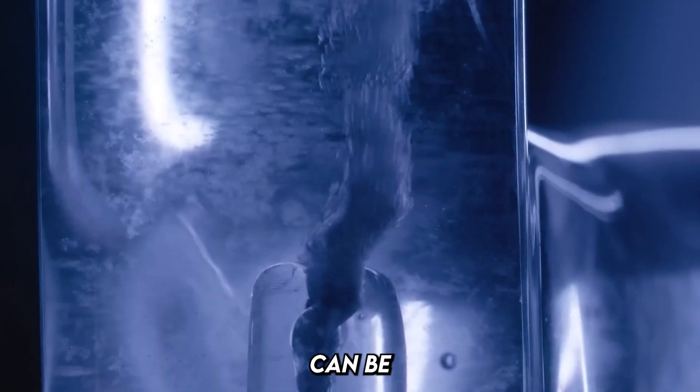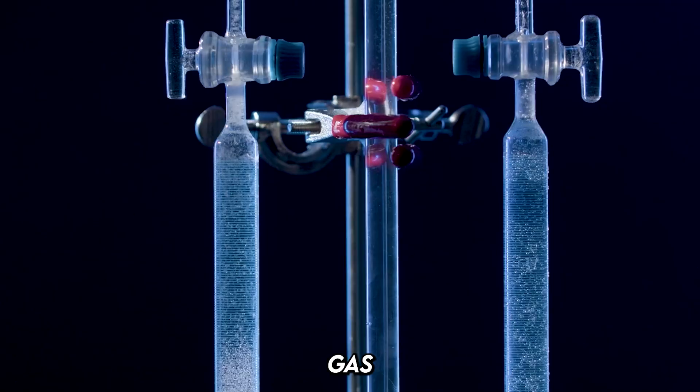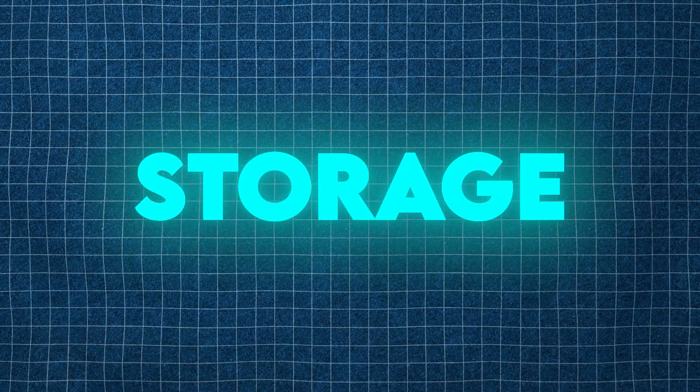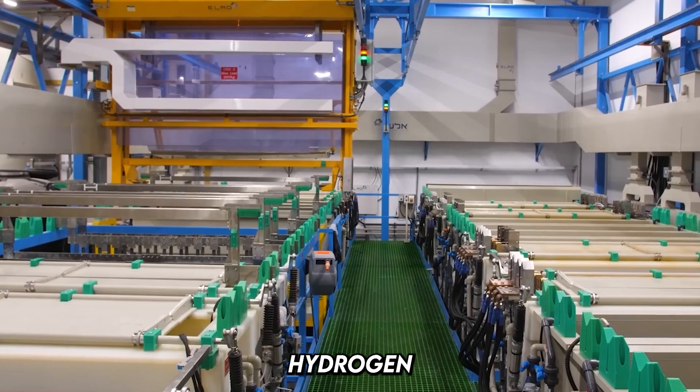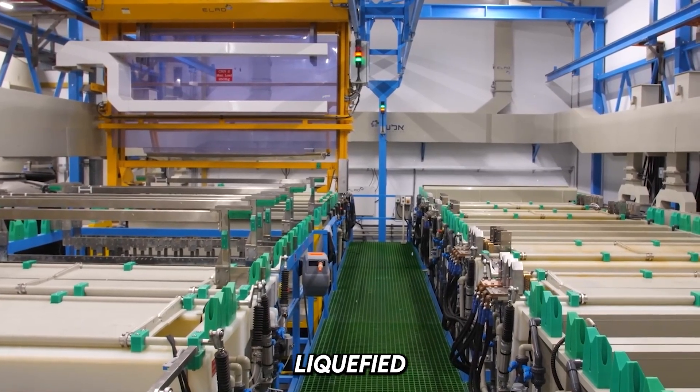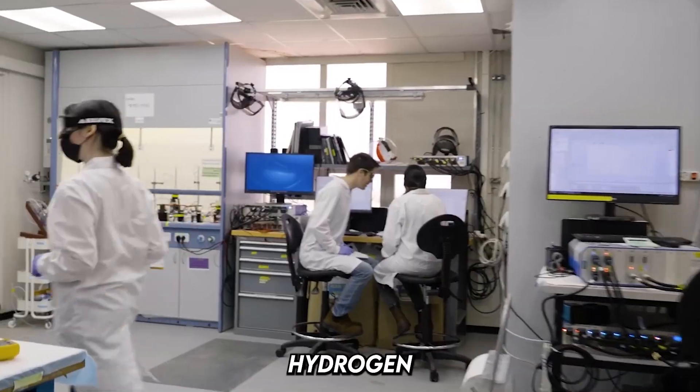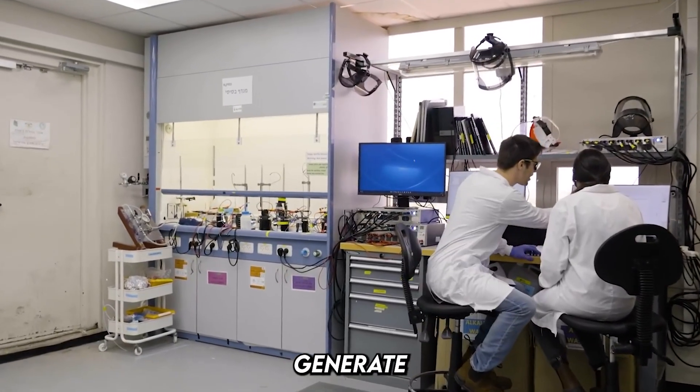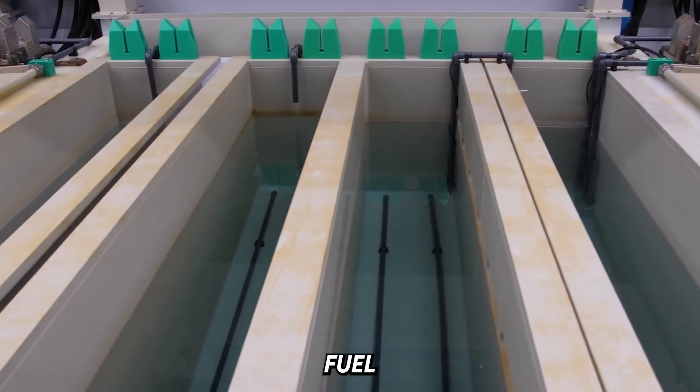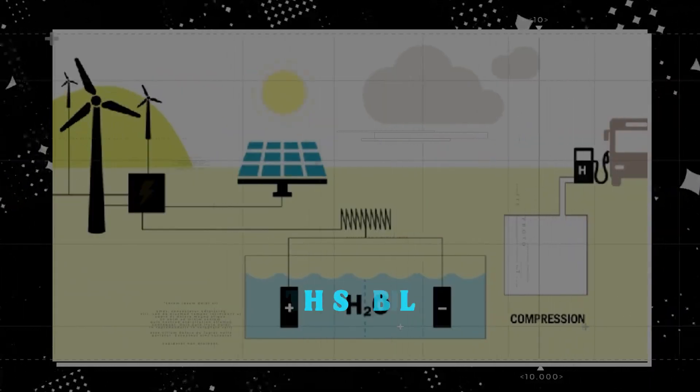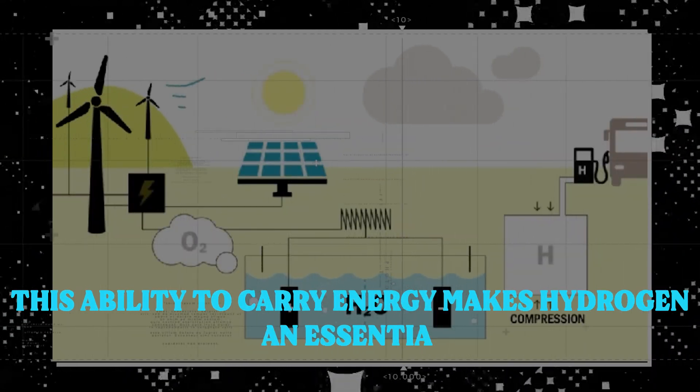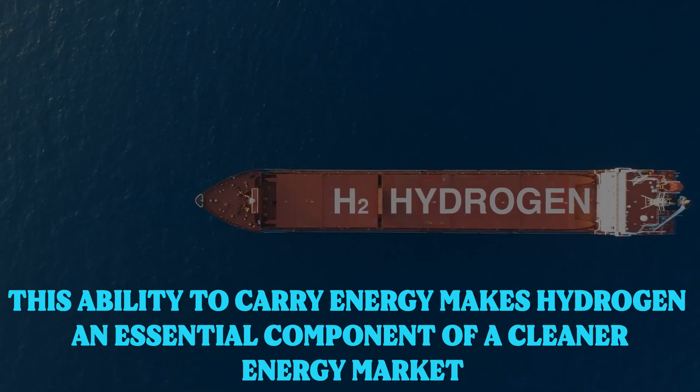Production: Hydrogen can be extracted from water, natural gas, or biomass. Storage: Once produced, hydrogen can be compressed, liquefied, or stored in chemical compounds. Utilization: Hydrogen is used in fuel cells to generate electricity or as a direct fuel in some cases. This ability to carry energy makes hydrogen an essential component of a cleaner energy market.